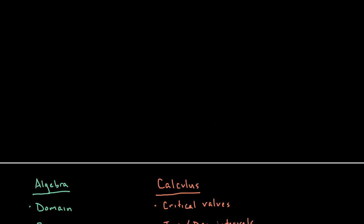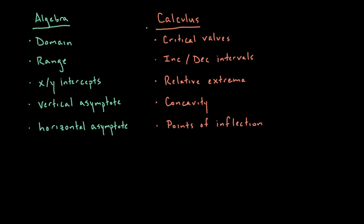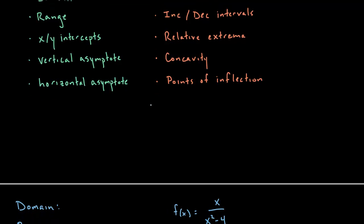The idea behind curve sketching problems is to take all of what we know — algebra and calculus — and put it all together to come up with a graph of a function. Nothing should conflict; everything we find should support everything else that we find. So let's start with the algebra stuff and then move on to the calculus stuff.